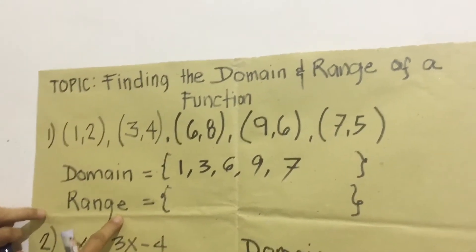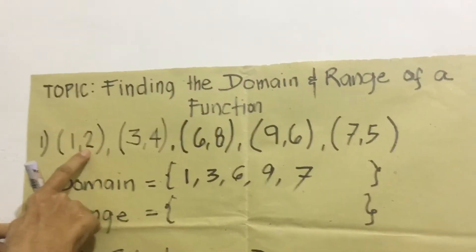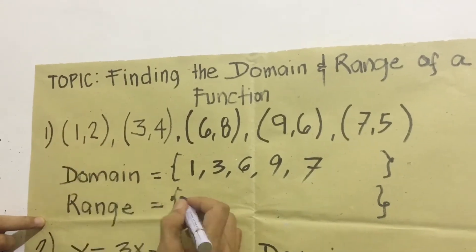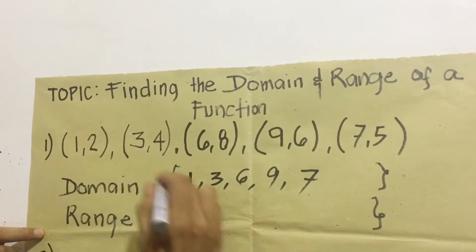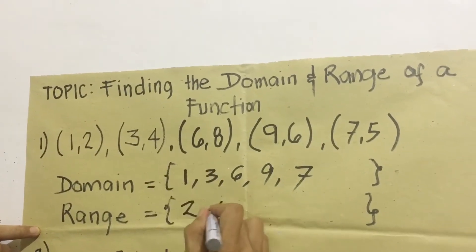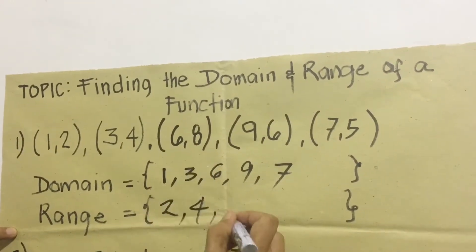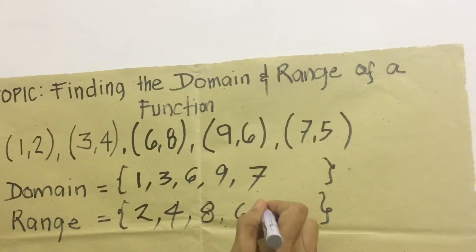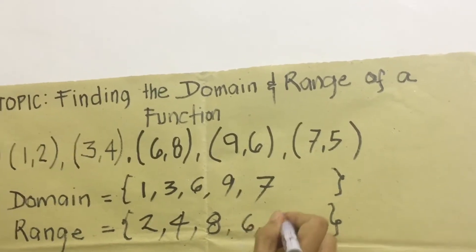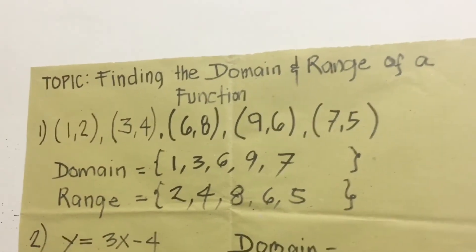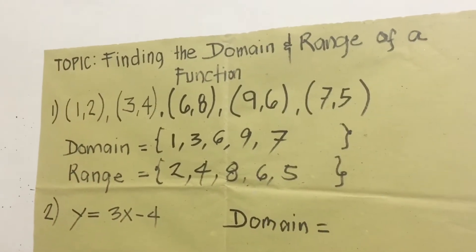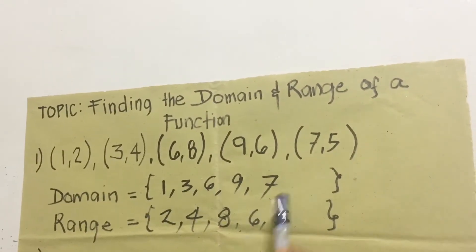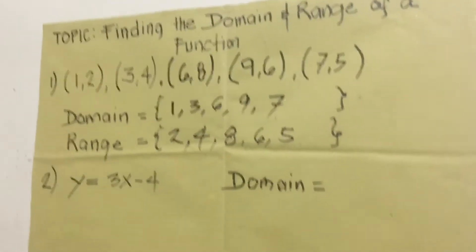For the range, that is called the ordinate or the y-coordinate: 2, 4, 8, 6, and 5. So the domain is {1, 3, 6, 9, 7} and the range is {2, 4, 8, 6, 5}.